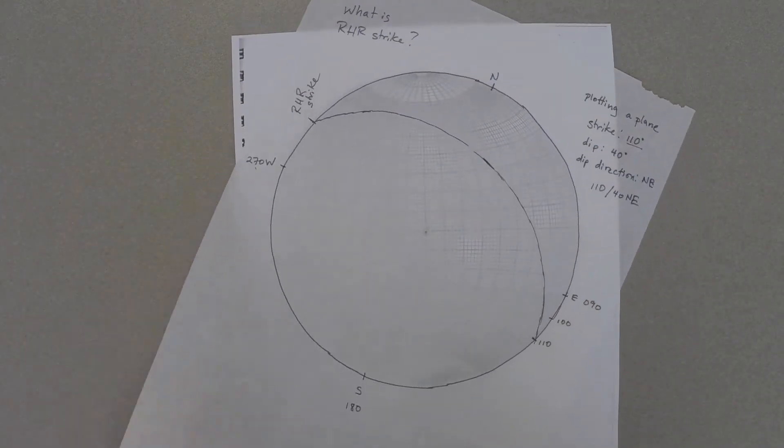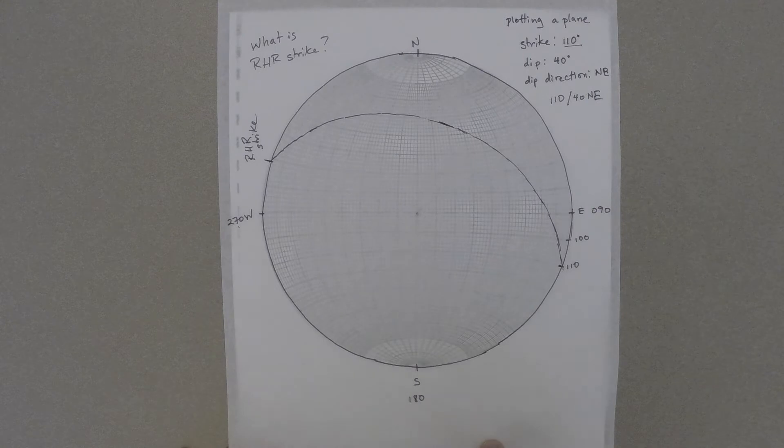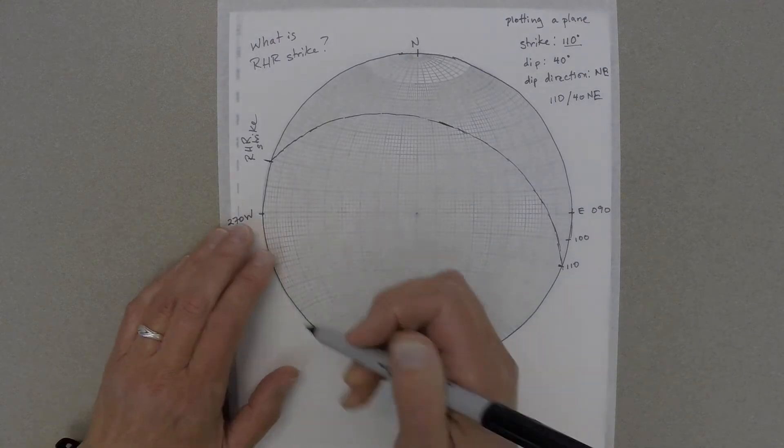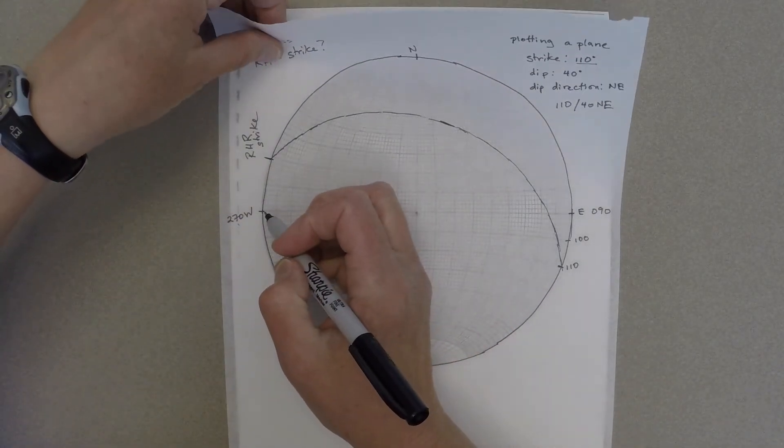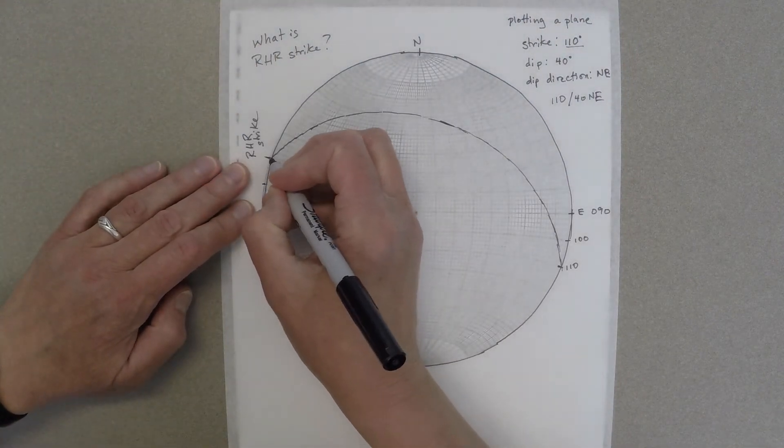Then you can spin your tracing paper back so that north on your tracing paper lines up with north on your stereo net. And then count around the primitive until you get to your right-hand rule strike.